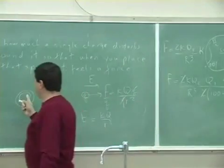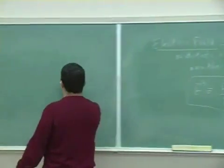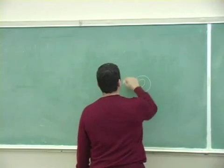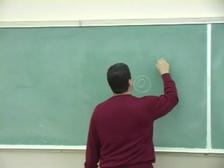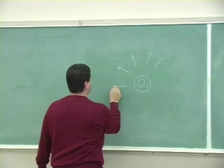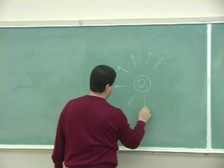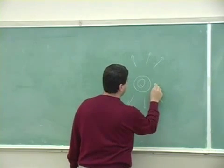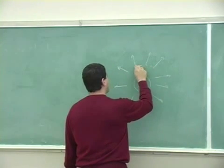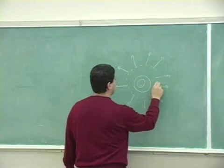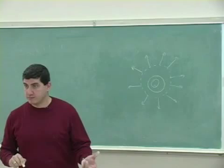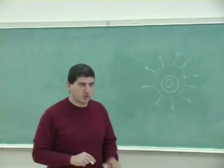The electric field created by a point charge is like this. At all points in space, it's going to create an electric field. In other words, if you're equidistant from the center of that point charge, the electric field strength is going to be the same at all points that are equidistant from that point charge.